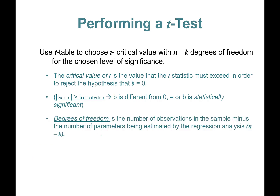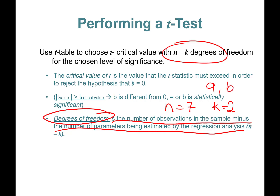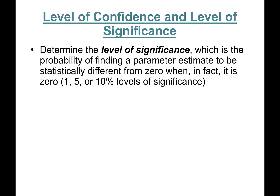Degrees of freedom is the number of observations in the sample minus the number of parameters to be estimated. We had 7 observations and k equals 2 because we're estimating a and b, so degrees of freedom equals 5 in this example. If the absolute value of the t-statistic is greater than the t-critical value, the parameter estimate is statistically significant at the given level of significance.